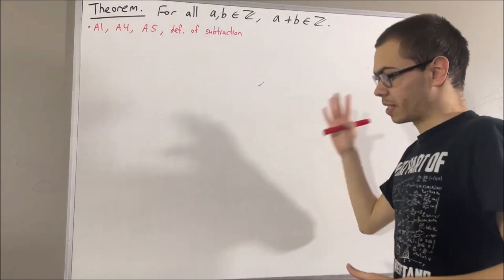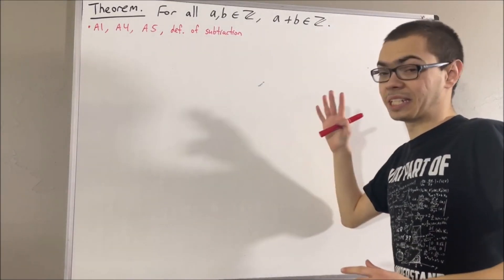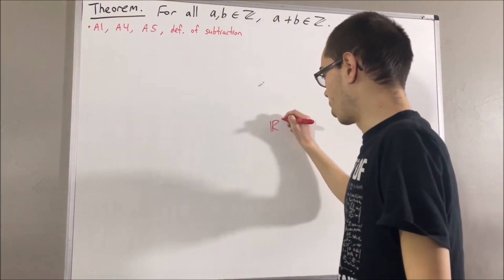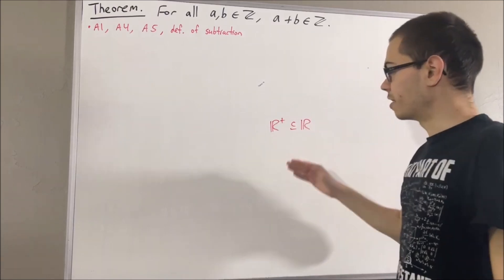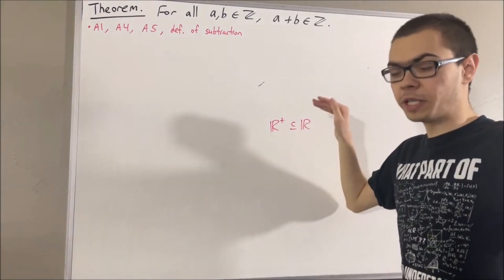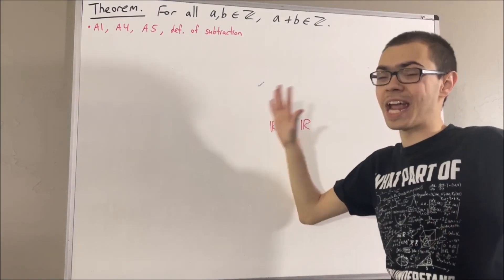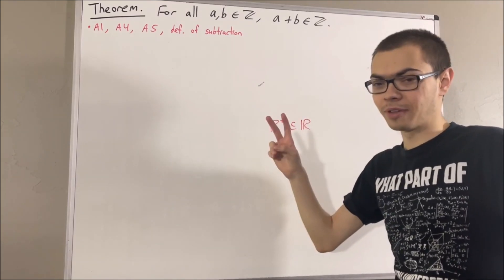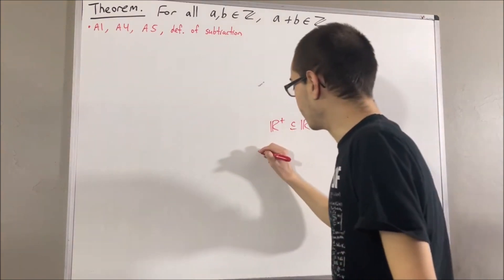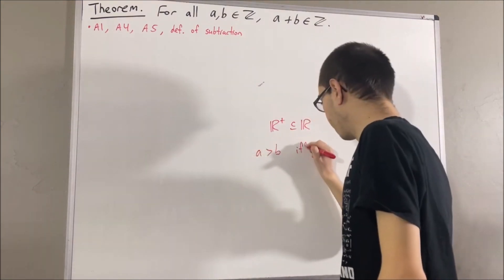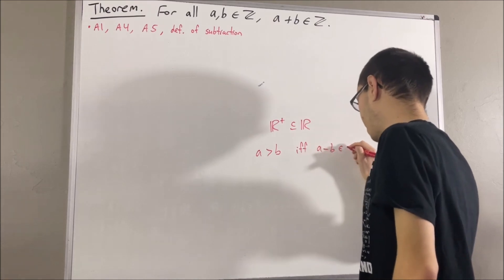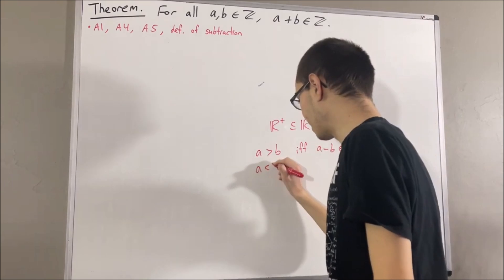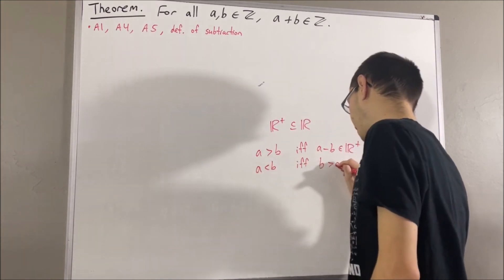Our real number system is also equipped with a subset that we call the set of positive real numbers, denoted as R-plus. Using the set of positive real numbers, we define the greater than relation and the less than relation as follows. Given any two real numbers a and b, we say a is greater than b if a minus b is a positive real number, and we say a is less than b if b is greater than a.